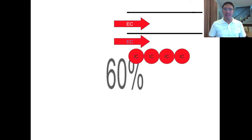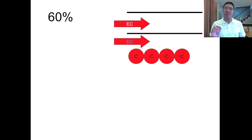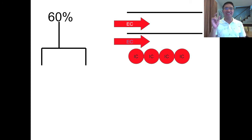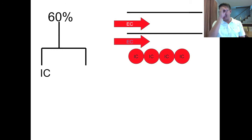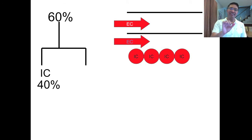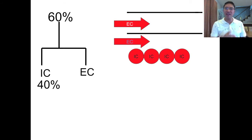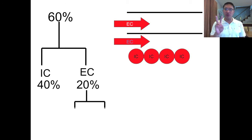60% of your body weight is fluid. But how many percent is in the IC and how many in the EC? Think about IC — perfect visual acuity is 20 over 20, and 20 plus 20 gives you 40. So the percentage of fluid in the IC is 40%. Therefore, the percentage of fluid in the EC is 60 minus 40, which is 20%. The extracellular is further subdivided into the intravascular and the interstitial.